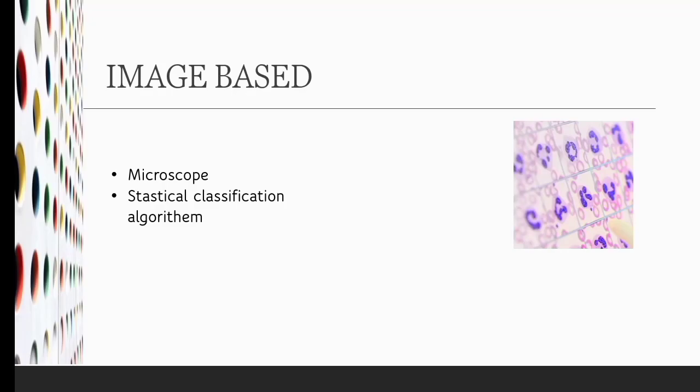The third is image-based analysis. This is the most modern technique available for differential count. This method involves using the microscope and statistical classification algorithm to carry out automated cell detection and counting of the cell by image analysis.